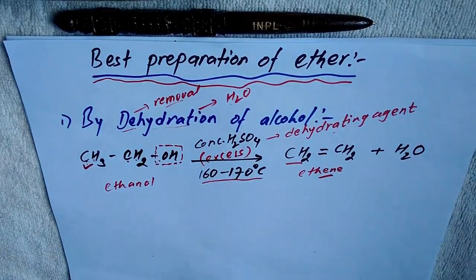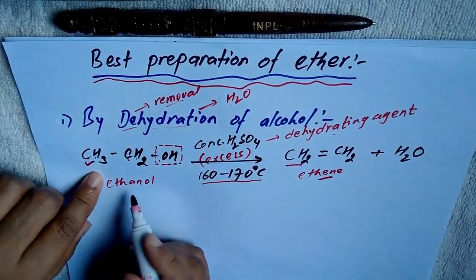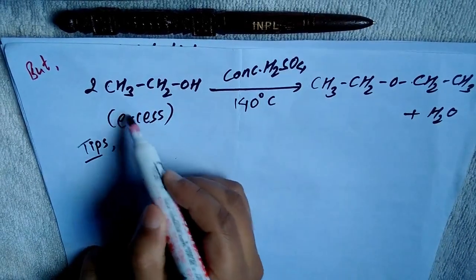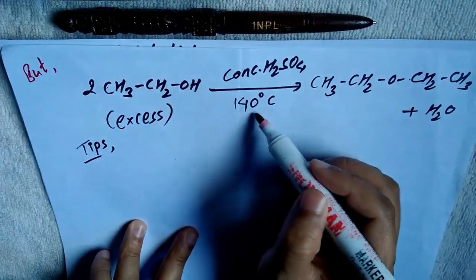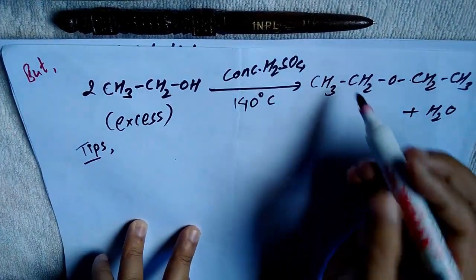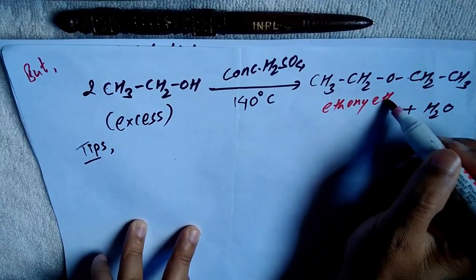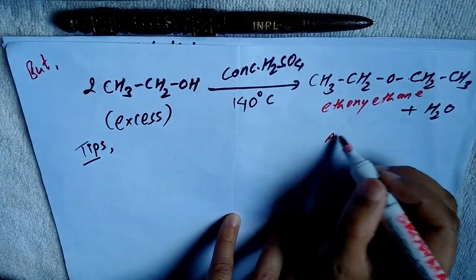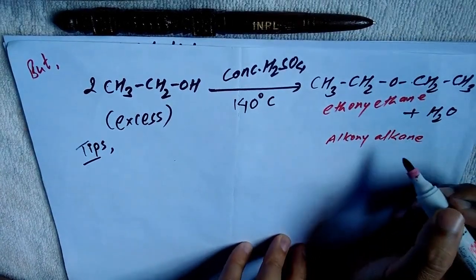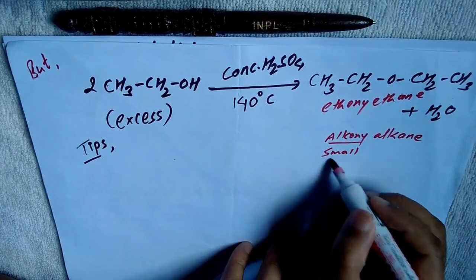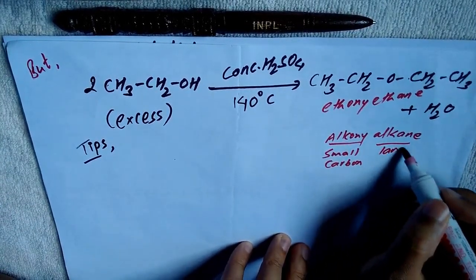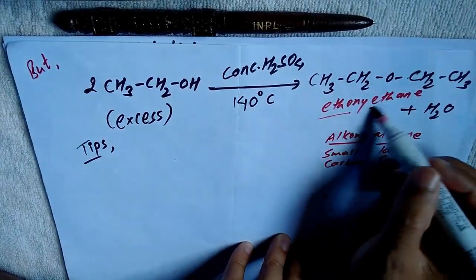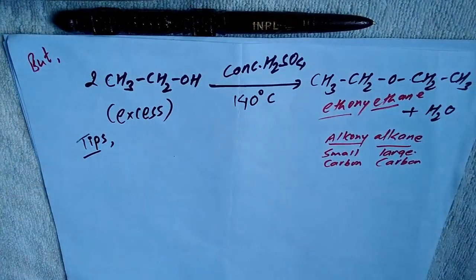If we use concentrated H₂SO₄ in a limited amount with ethanol in excess and decrease the temperature, then ether is formed. When 2 moles of ethanol are heated with limited concentrated H₂SO₄ at about 140°C, ether is formed. This product is ethoxyethane. For nomenclature, we use 'alkoxy alkyl' — the side with fewer carbons gets the alkoxy prefix, and since both sides here have equal carbons, we say ethoxy ethane.